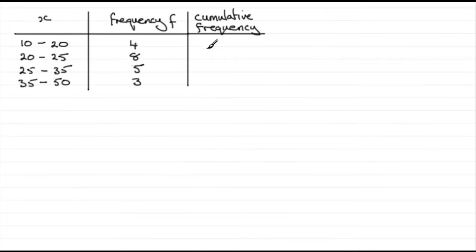So in other words we've got four values which are less than 20. We've got a total of 12 values now, eight and four, which are less than 25. So just put 12 and less than 25.